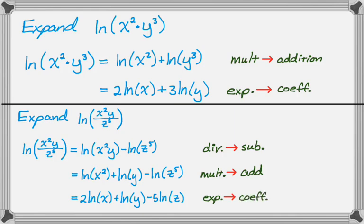If you're in a particularly picky class, you would want to put absolute values around that x — since x squared is always positive, x at that point could have been positive or negative. But we're going to gloss over that because it does just cloud what you're doing.